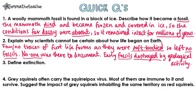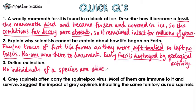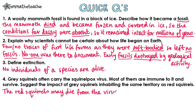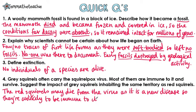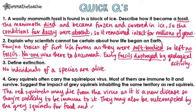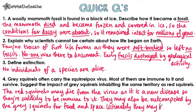Question 3: Define extinction. This is when there are no individuals of a species still alive. Question 4: Grey squirrels often carry the squirrelpox virus. Most of them are immune to it and survive. Suggest the impact of grey squirrels inhabiting the same territory as red squirrels. The red squirrels may die from the virus as it is a new disease, and so they're unlikely to be immune to it. They may also be out-competed by the grey squirrels for food and space, so ultimately they may become extinct.